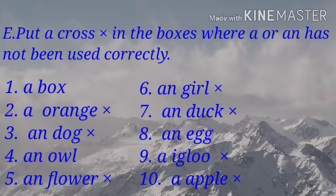Number 6, an girl — incorrect, so give a cross mark. Number 7, an duck — cross. Number 8, an egg — correct.